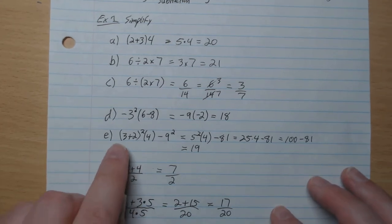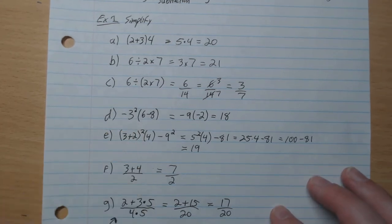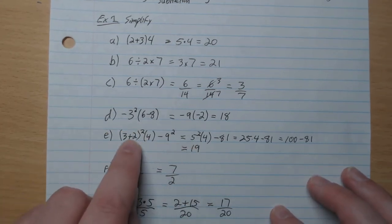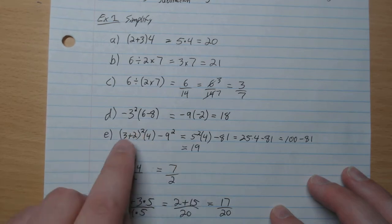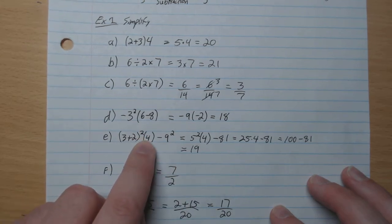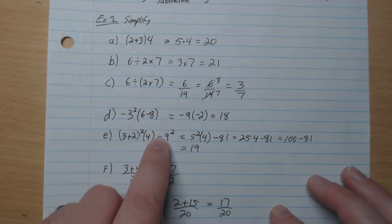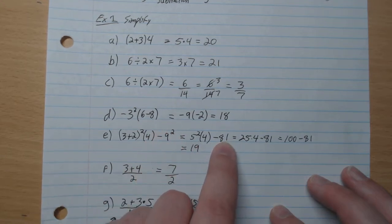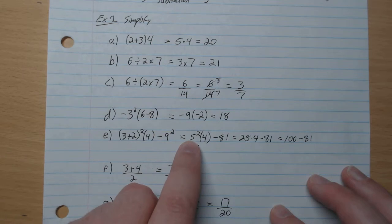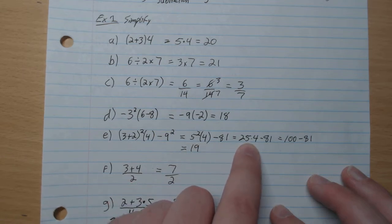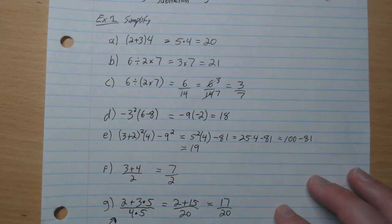Next. 3 plus 2 is within the brackets. So that goes first. So we got 5 squared. So we have 5 squared times 4 minus this thing, which is 9 squared. So that gives 81. So 5 squared is 25. So we have 25 times 4 minus 81. Multiplication comes first. So we have 100 minus 81, which gives 19.